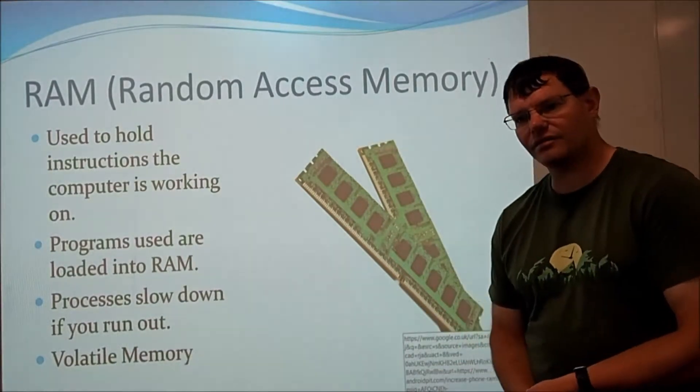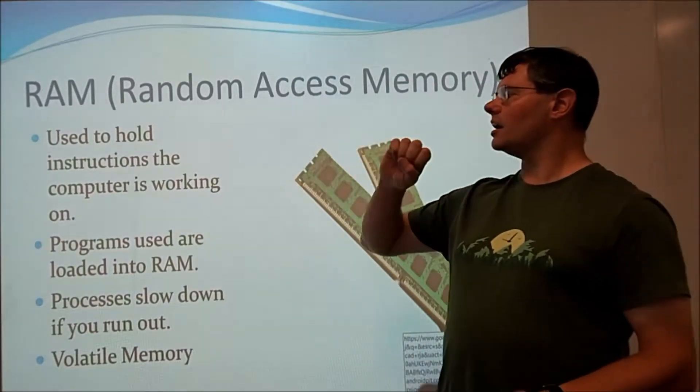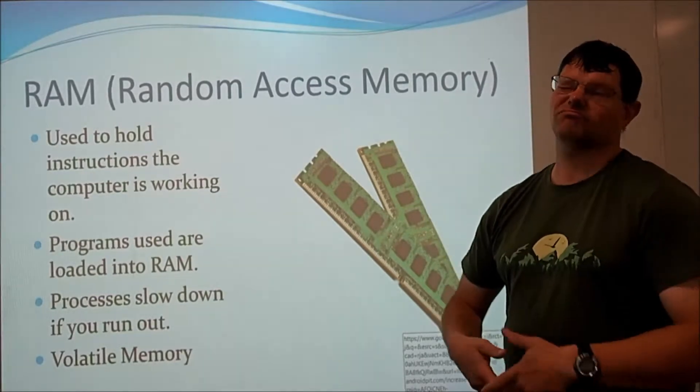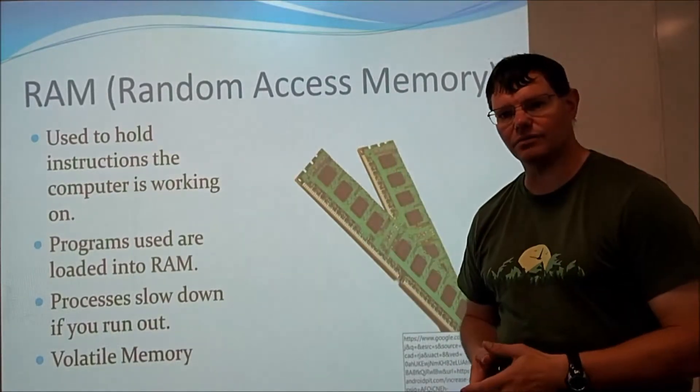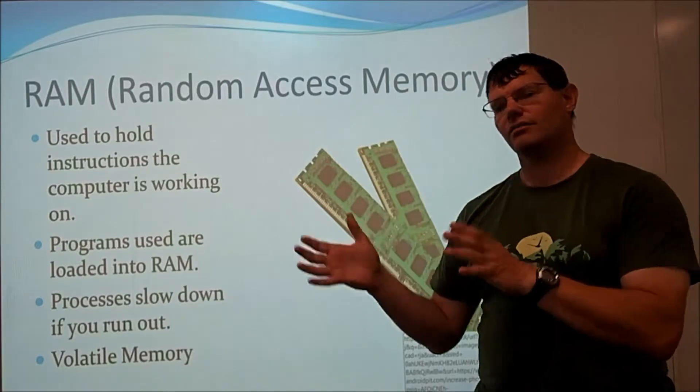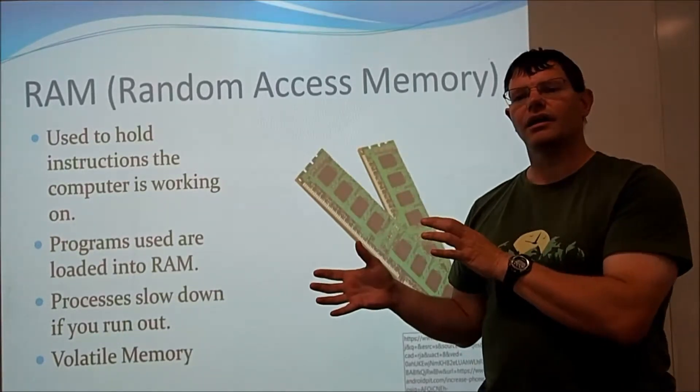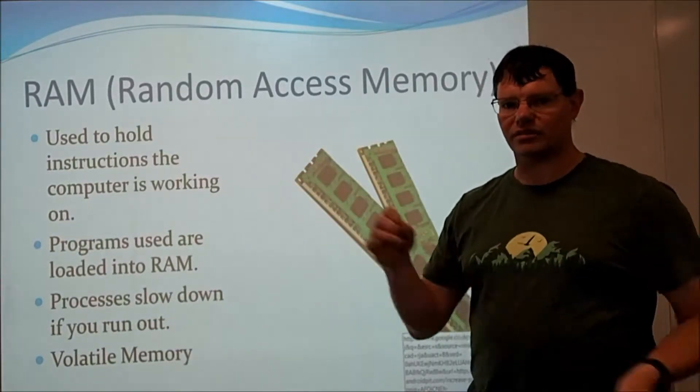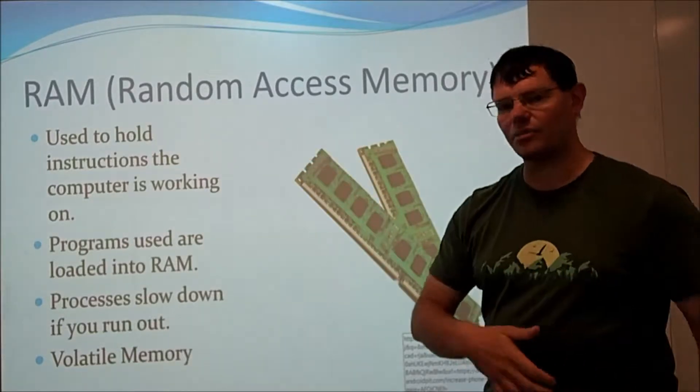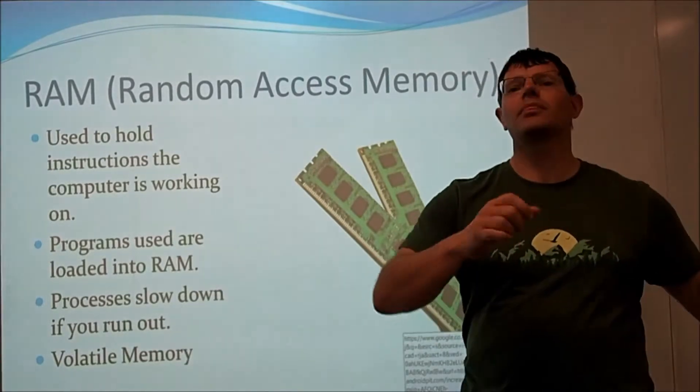RAM. Random Access Memory. This is the first type of memory that you have on your computer. So, this type of RAM is used to hold instructions that the computer is working on at the time. So, when you open up a game, like Halo or Battlefield, Call of Duty, Forza, whatever game you may be playing on your PC, what it will do is it will load that game into the RAM. The processor can do many, many, many calculations a second. The thing that slows it down is how fast you can send instructions to the processor. And RAM is very, very fast.